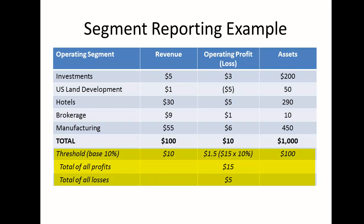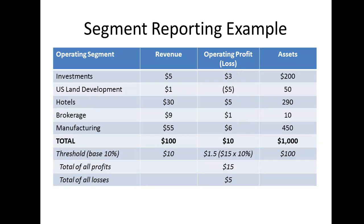For the revenue and asset tests, it is simply a matter of taking 10% of the combined total. For the profit test, the threshold is based on the greater of the total of all operating segments reporting profits, and the total of all operating segments reporting losses. In this case, it works out that the total of all profits is greater, and as a result our threshold becomes $1.5 million based on this outcome. So now we can go through and identify the reportable segments.